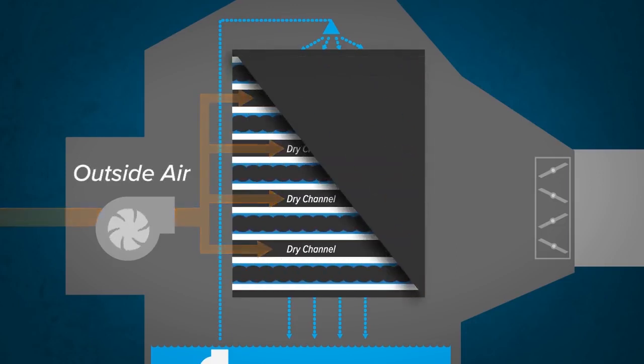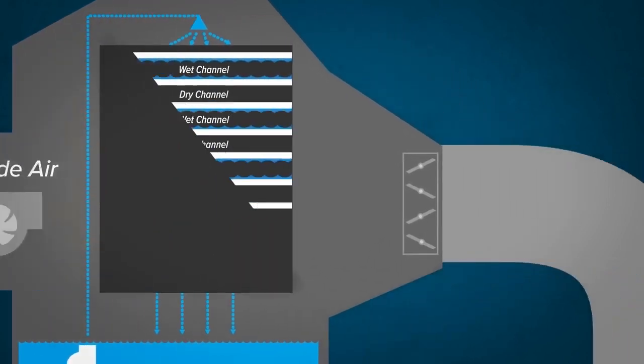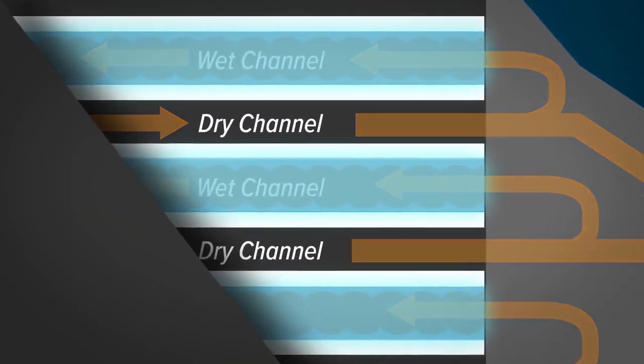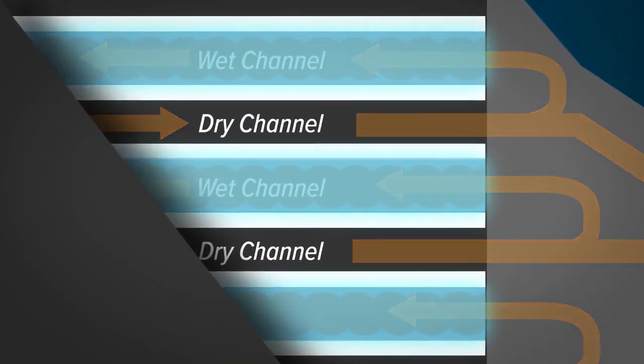Hot outdoor air enters the dry channels of the heat exchanger through a high efficiency fan. After air passes through the dry channels, a portion of the air is supplied to the building and the rest returns through the wet channels. This is where the evaporative cooling process takes place.